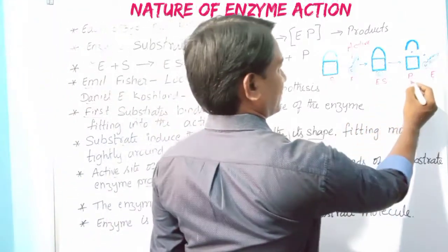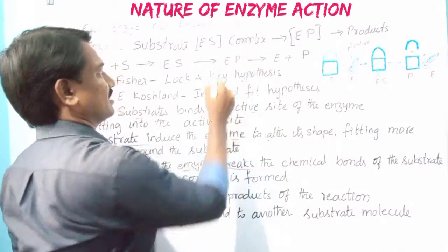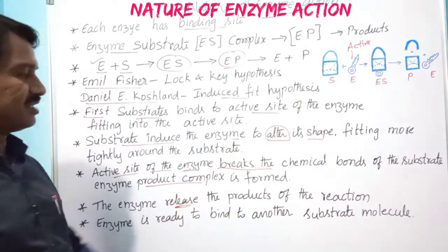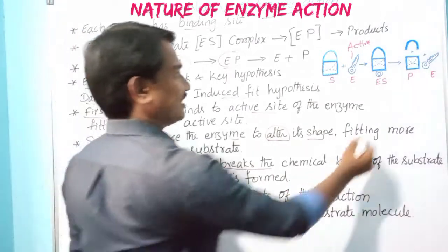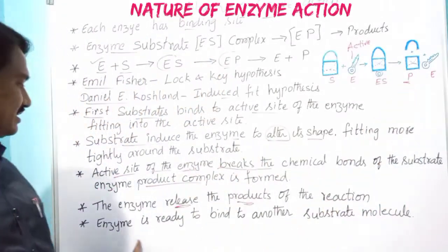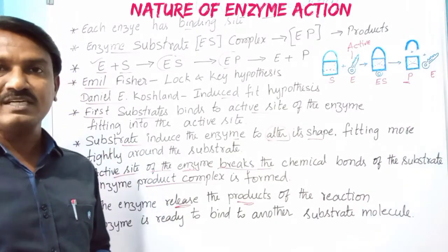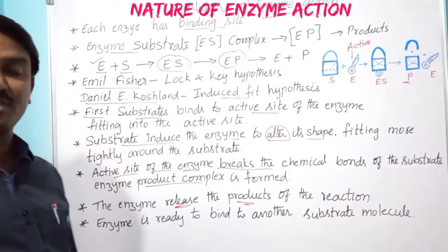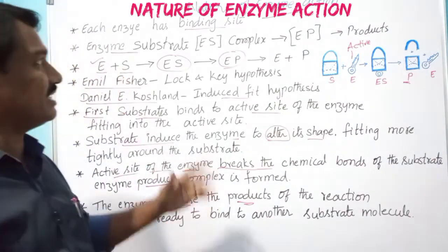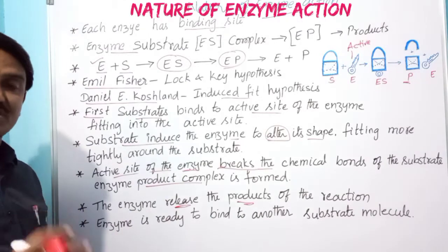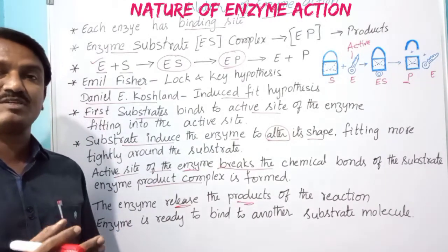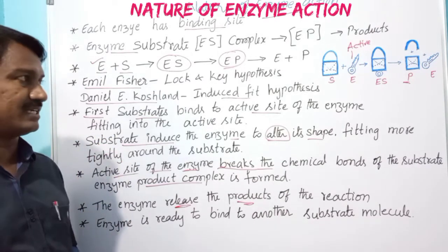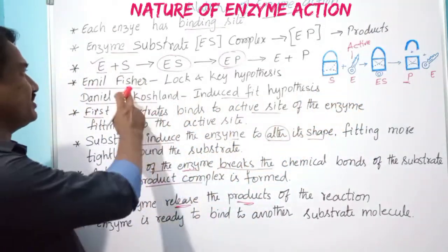The enzyme-product complex is formed, then the enzyme releases the products of the reaction. The enzyme is then ready to bind another substrate molecule because there is no change in the structure of the enzyme during the chemical reaction — it only speeds up the rate of reaction. This is the nature of enzyme action: each enzyme contains activation sites similar to the structure of the substrate, and one enzyme acts on only one substrate.